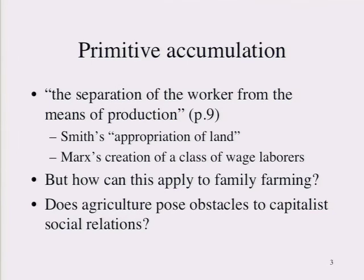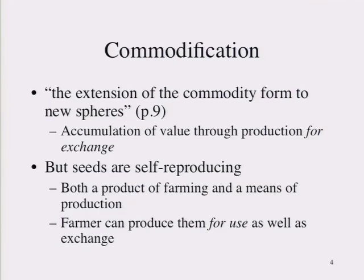He poses a question that's been asked for at least 100 years: does agriculture pose obstacles to capitalist social relations? Are there intrinsic features of agriculture that make it resistant to the standard model of capitalist production, in which you have owners of the means of production on one side and laborers on the other? The family farm would appear to provide evidence that maybe this is the case. Commodification he defines as the extension of the commodity form to new spheres — the accumulation of value through production for exchange in spheres that were previously not subject to that kind of value accumulation.